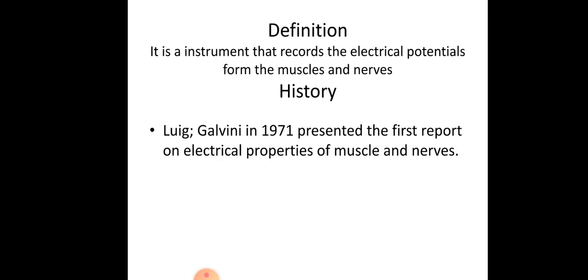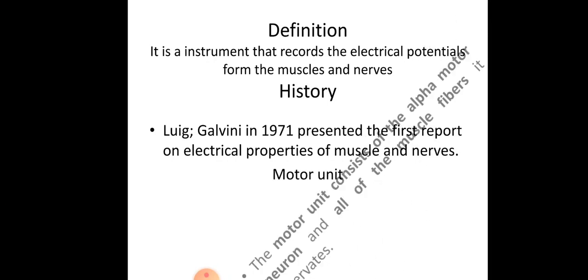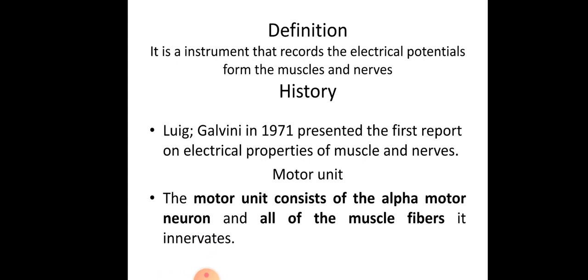He demonstrated muscle activity followed by stimulation of nerves and recorded potentials from the muscle fibers in frog. Coming to what is a motor unit: it consists of an alpha motor neuron and all the muscle fibers it innervates. The stimulus that the muscle fiber receives, initiating the contractile process, is transmitted through an alpha motor neuron from the brain.